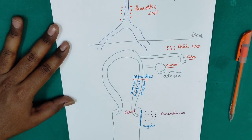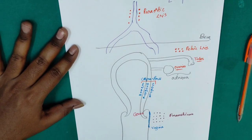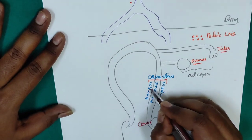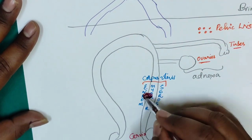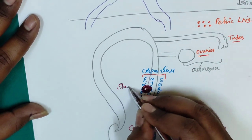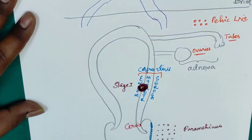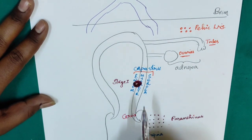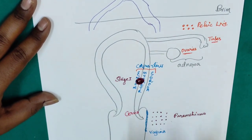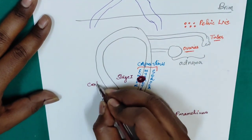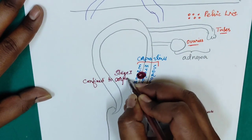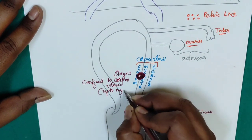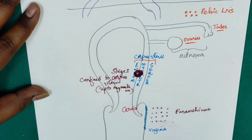With this schematic diagram, I am going to stage CA endometrium now. Stage 1 is confined to corpus uteri. Confined to corpus uteri means it is up to myometrium only — that is the catchy point. So stage 1 is confined to corpus uteri, meaning up to myometrium.